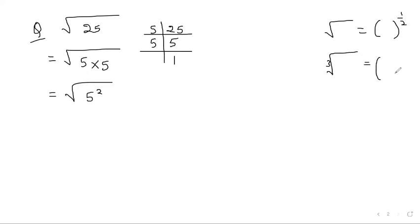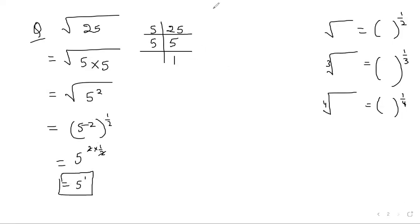Cube root will be power one by three. Fourth root will be? One by four. One by four. This way I can write five to the power of two to the power of one by two. Isn't it? So this way, two into one by two, you get five. Is it making sense? That's how we used to do. Remember?